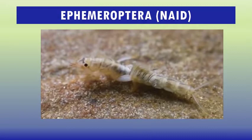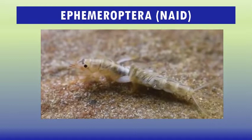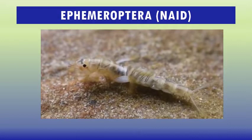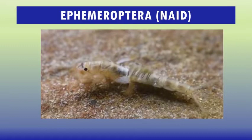Immature mayflies are aquatic and are referred to as nymphs or naiads. In contrast to their lives as adults, they may live for several years in the water. They have an elongated, cylindrical or somewhat flattened body that passes through a number of instars, molting and increasing in size each time. Nymphs vary in length depending on species, from 3 to 30 millimeters.